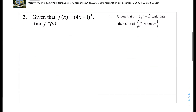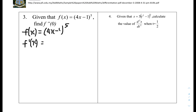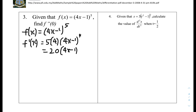Question 3: given that f(x) equals (4x minus 1) to the power of 5, find f''(0). Let's take it step by step by finding the first derivative first. So f'(x) equals 5 times the derivative of the bracket, which is 4, times (4x minus 1) to the power of 4, giving us 20 times (4x minus 1) to the power of 4.